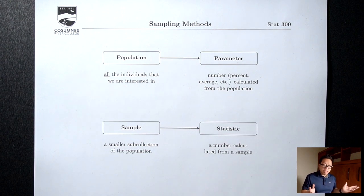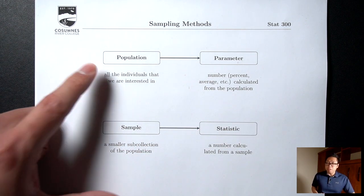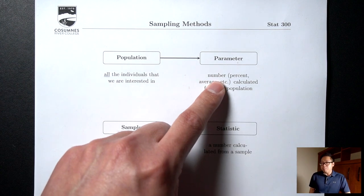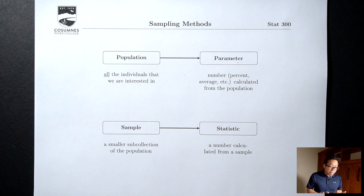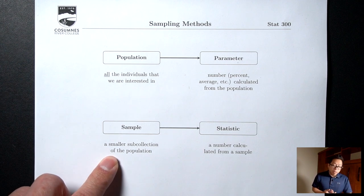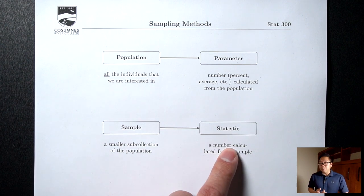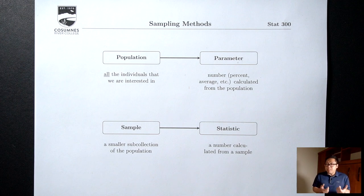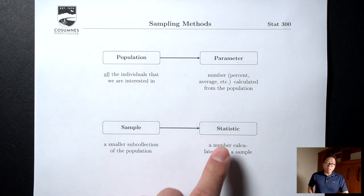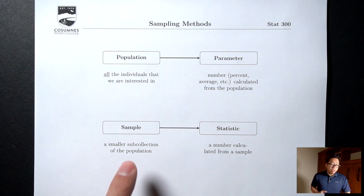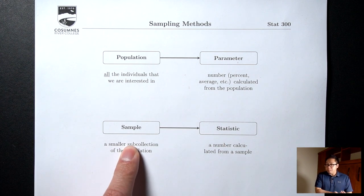Most of the time you can't get data from the entire population, so most of the time you can't get the parameter. If you calculate the percent from data you get from a sample, that would be called a statistic. So if I take a sample of a thousand people in Sacramento and ask them whether they have a PlayStation 5, the percent I get — say 22% — would be called a statistic because it came from just those thousand people in my sample.